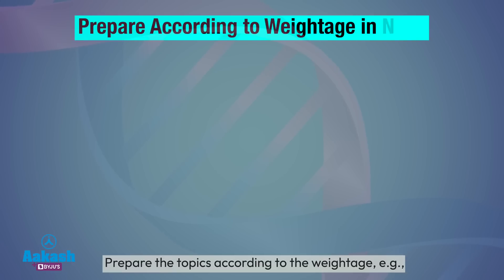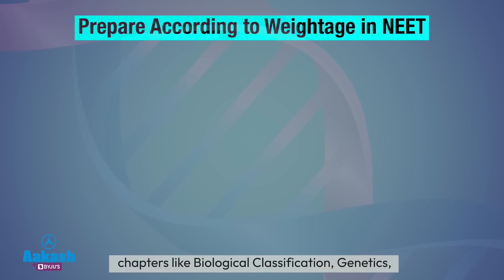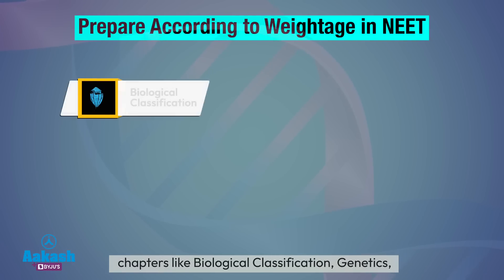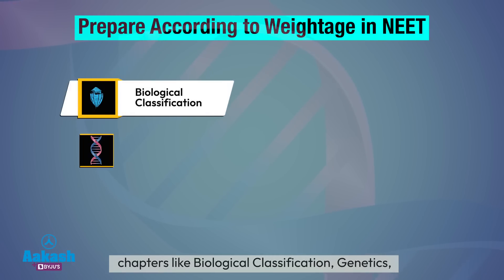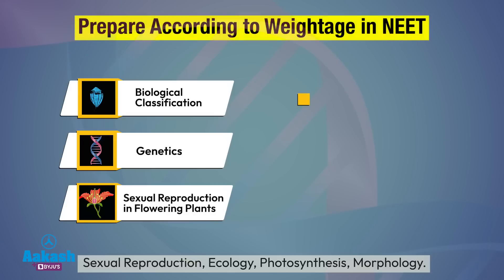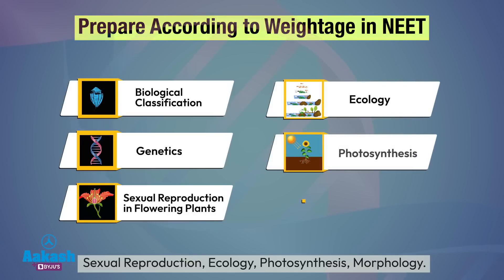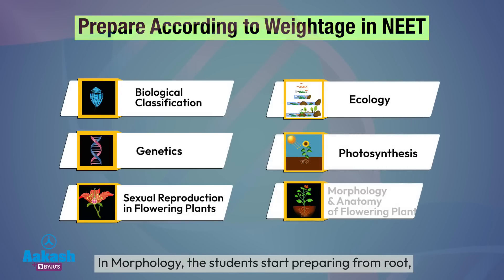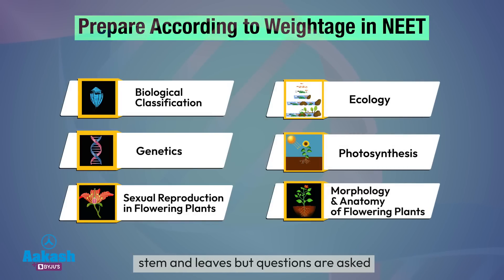Prepare with weightage accordingly. Chapters like biological classification, genetics, sexual reproduction, ecology, photosynthesis, and morphology should be prioritized. In morphology especially, students start studying from root, stem, and leaf, but questions in the exam typically come from flowers and plant families.